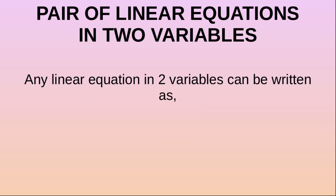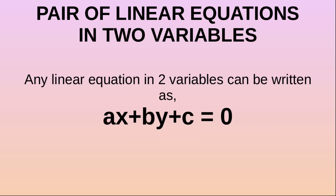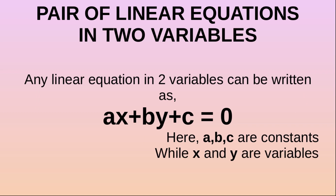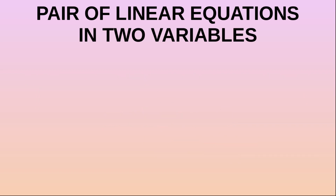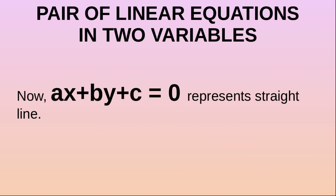Any linear equation in two variables can be written as ax plus by plus c is equal to 0, where a, b, and c are constants while x and y are variables. The expression ax plus by plus c equals 0 represents a straight line.